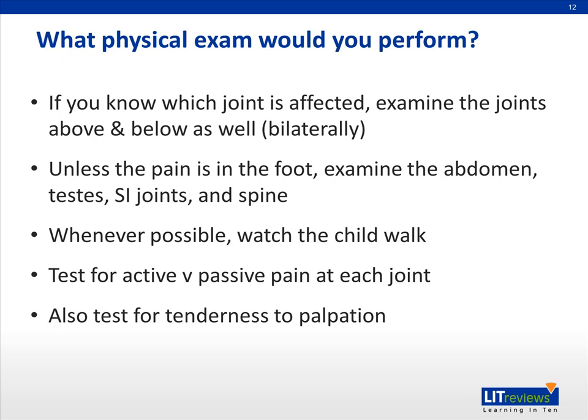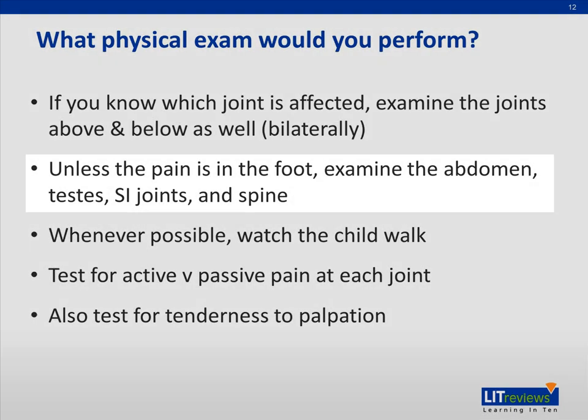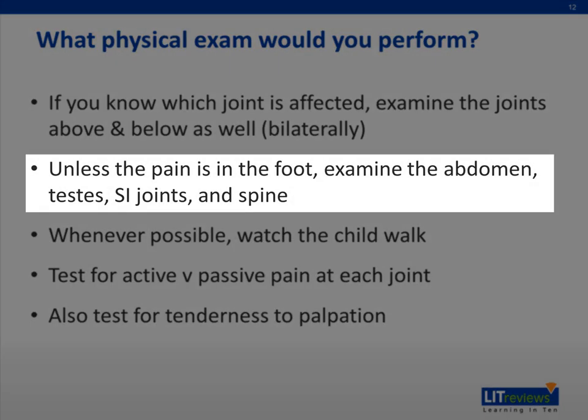When examining the child with a limp, you'll want to examine the affected joint as well as the joints above and below, and those same three joints on the opposite side of the body as well. Unless you're certain that the pain is coming from the foot, you'll want to do a complete abdominal exam, testicular exam, as well as examining the sacroiliac joints and the spine, because appendicitis, testicular torsion, SI joint pain, and spinal epidural abscesses can all refer pain to the hip or to the knee.